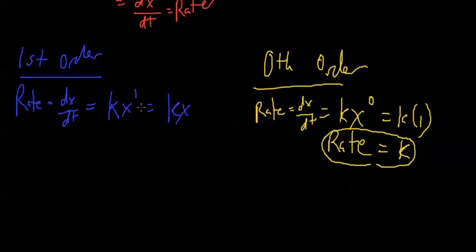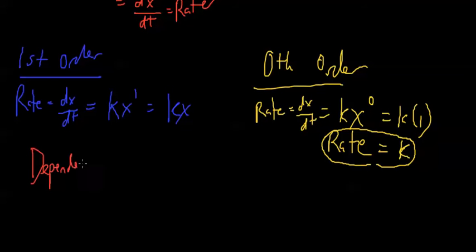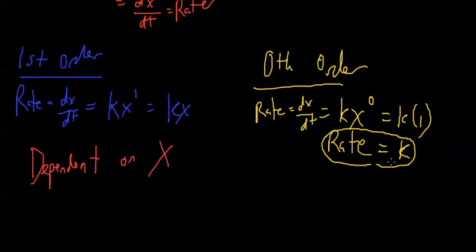So what does that mean? It pretty much means that first order reactions are dependent on your starting amount. If you have more x to begin with, you're going to have a faster rate — it's directly proportional. In biopharm, it's mostly going to be rate of elimination. So if you have more drug to begin with, you're going to have faster elimination. And in zero order, rate is k, so it's going to be a constant no matter what. In zero order reactions, rate is going to be constant — independent of x.